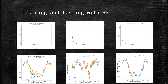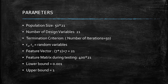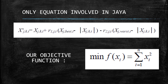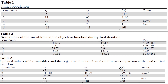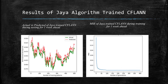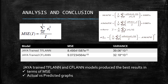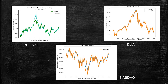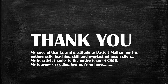The study confirms the superiority of Jaya algorithm trained FLAN models over the traditional BP trained FLAN models, and amongst all models, the Jaya trained T-FLAN is outperforming everyone. Mean square error (MSE) and mean absolute percentage error (MAPE) are used for performance evaluation. The simulation study is done using Python 3 in an Anaconda environment.